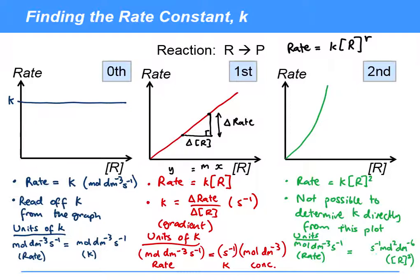but now in order to cancel moles squared, we've got to have moles to the minus one. Also we've got to have decimetres cubed to make decimetres cubed times decimetres to the minus six into decimetres to the minus three,